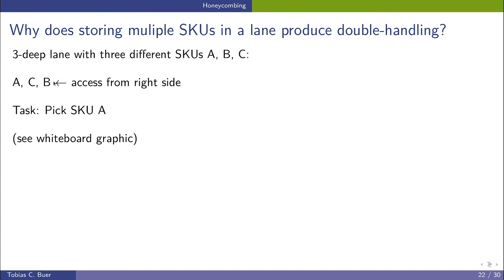So the first pallet that can be accessed is pallet B. And now what would happen if we have to pick SKU A? First of all, we need to pick pallet B as the first operation and move it outside in a different lane. Second, we have to pick pallet C and move it outside to a different lane.